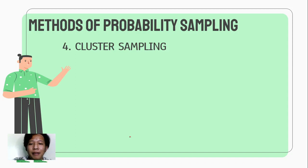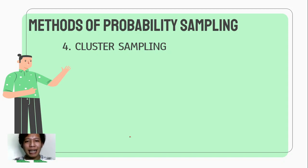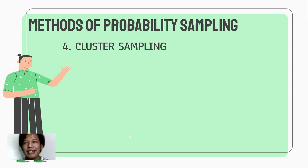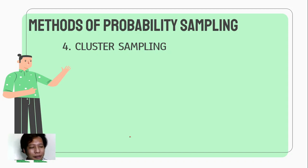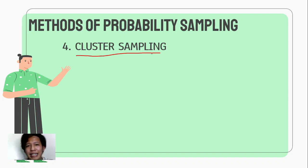Last for probability sampling, we have cluster sampling. Almost the same siya ng stratified, pero kay cluster sampling, ikaw mismo yung gagawa ng grupo. Let's say, Grade 11 students yung respondents mo — sa Grade 11, merong iba't ibang section. Walang common characteristics — bawat section, yung tinatawag nating cluster. It depends upon you: sa bawat cluster, kukuha ka ng random, or randomly kukuha ka ng isang cluster bilang sample mo.